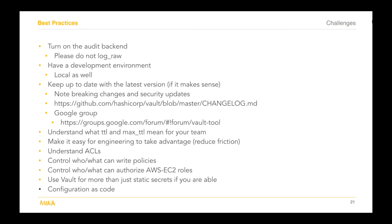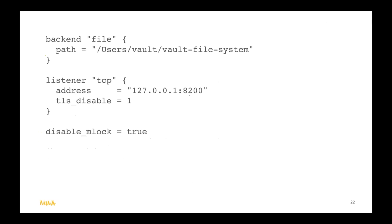I would show an example of a simple Vault configuration file you could use to do local development. I use the file backend—it writes things encrypted to my file system—and I have it listening on the default port of 8200. I disable TLS and disable MLock because I'm not doing anything crazy; this isn't a high-availability system, and by disabling MLock I don't have to give Vault the higher privileges that you might think.